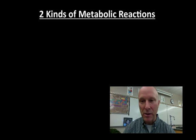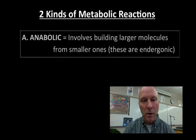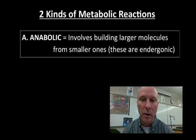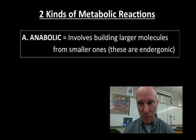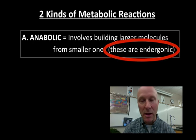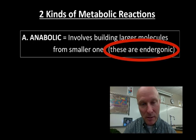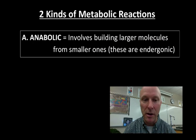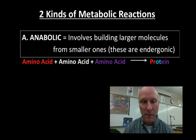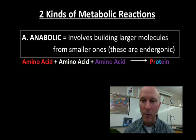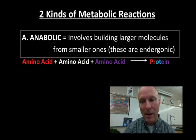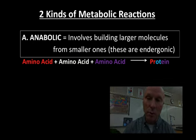There are two kinds of metabolic reactions. First is anabolic reactions. These are metabolic reactions involving building larger molecules from smaller ones. These are always endergonic reactions, meaning that energy needs to be put into the reaction in order to get it to finish. This is what happens when, for example, a cell makes a protein by bonding amino acids together — it's making a larger molecule and it requires an input of energy.